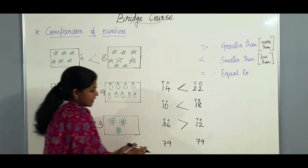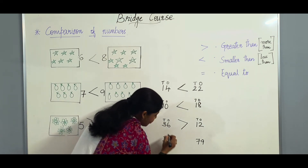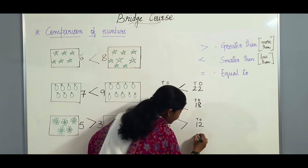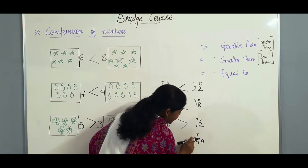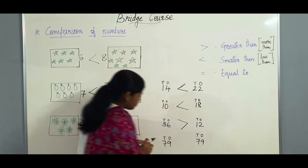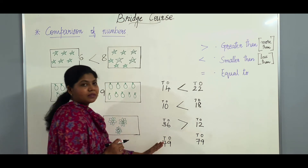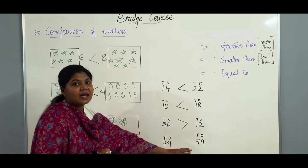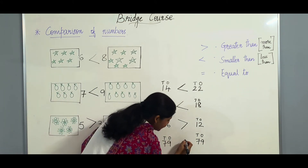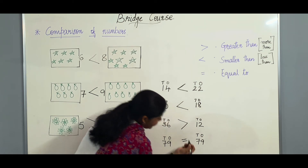Now in the next example, in the tens place we have 7 and in the ones place we have 9. And in the same way, the other number also has 7 in the tens place and 9 in the ones place. When we are comparing these numbers, these numbers are the same. So when both numbers are the same on both sides, we call it equal to — we use the equal to sign.